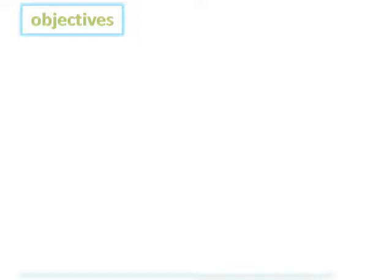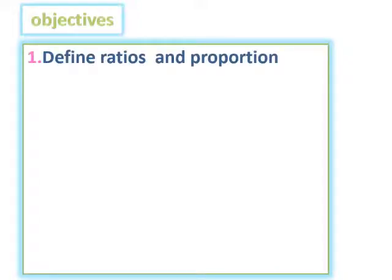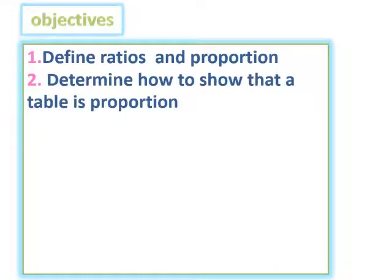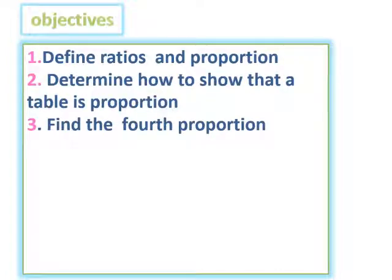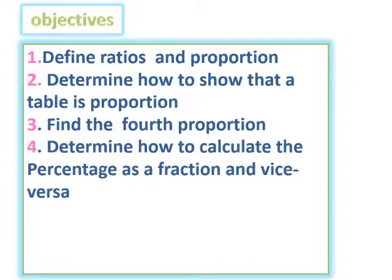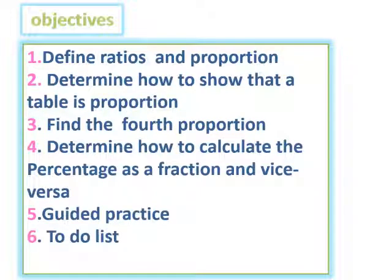The objectives of our lesson are: define ratios and proportion, determine how to show that a table is proportion and find the fourth proportion, determine how to calculate the percentage as a fraction and vice versa, guided practice and to-do lists.